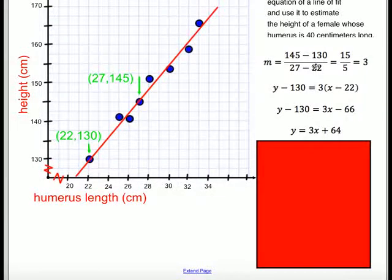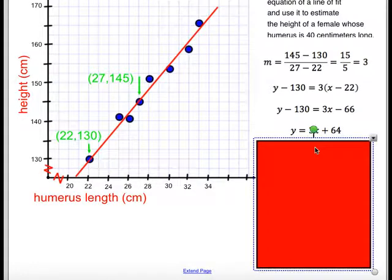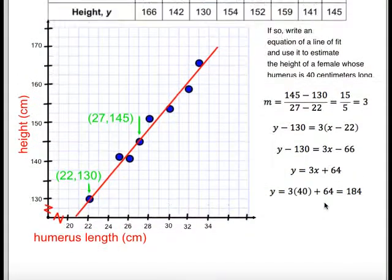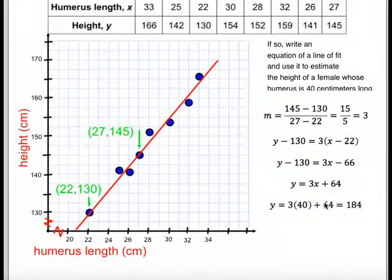Now the other question asked, if it is, and if you can write an equation, how tall would the approximate height of a person with a 40 centimeters long humerus be? So all we do is plug in 40 where we see x. So we do 3 times 40 plus 64, and that yields us an answer of 184 centimeters tall.